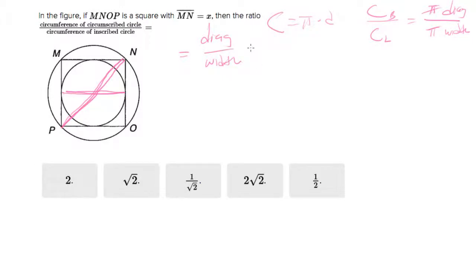Now we already know the width of the square is x. So we really just need the diagonal, and we divide it by x, and that'll give you your answer.